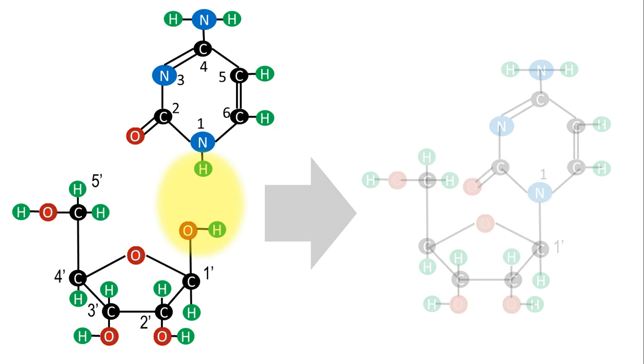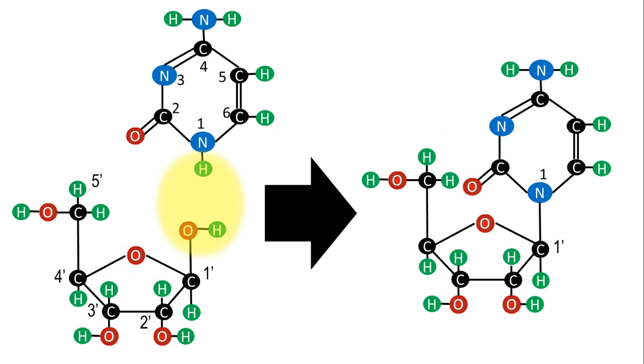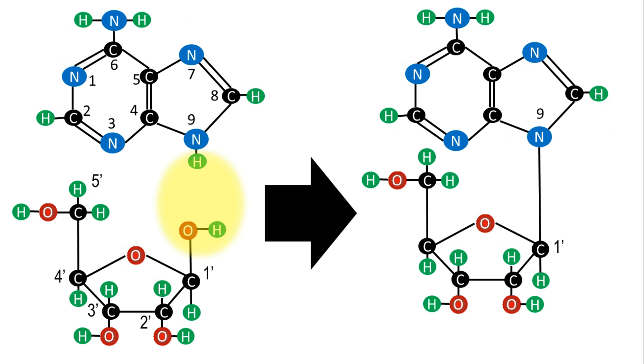In nucleosides and nucleotides, pyrimidines are covalently bound from the N1 to the C1' of the sugar, and purines are bound from their N9 atom.